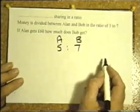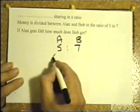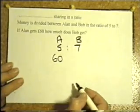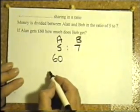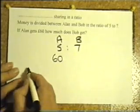But it says Alan gets £60. So if Alan is getting £60, 5/12, that means to say that £60 is in fact 5/12 of the amount of money. In other words,